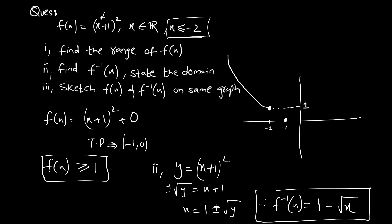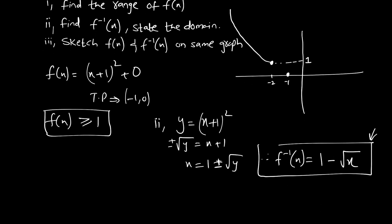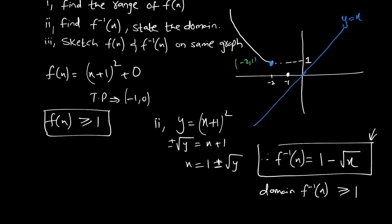The domain of the inverse function is the range of the main function. The range of f(x) was f(x) ≥ 1, so the domain of f⁻¹(x) is x ≥ 1. To sketch f(x) and f⁻¹(x) on the same graph, draw the line y = x. The point (−2, 1) on f(x) becomes (1, −2) on f⁻¹(x), and you draw the reflection in y = x.